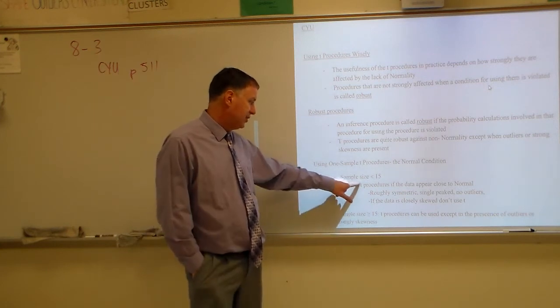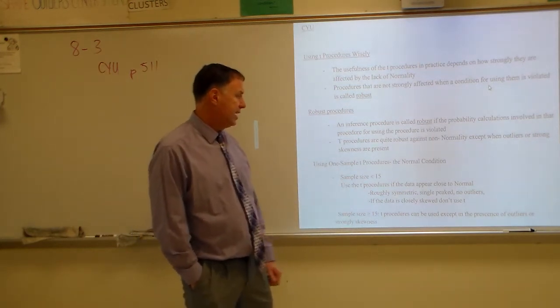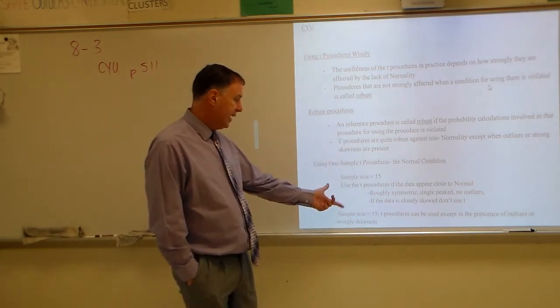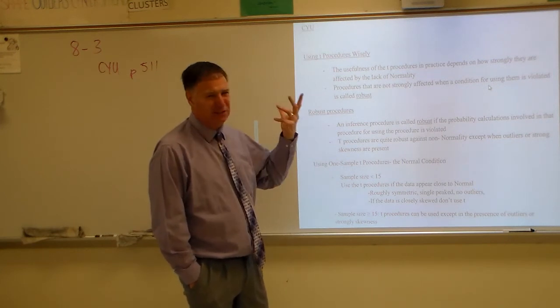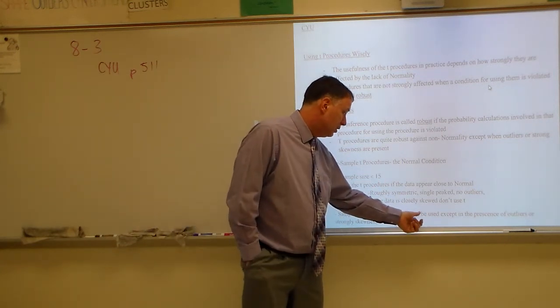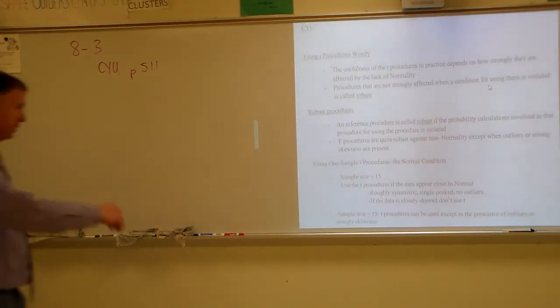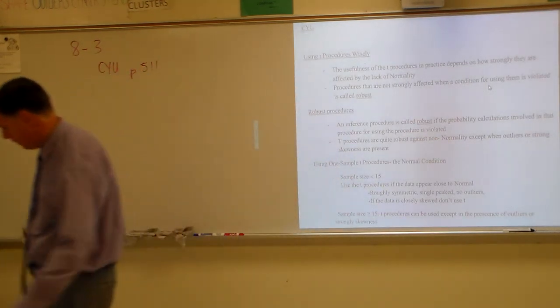Use the T if the sample size is less than 15, use the T procedures if the data appears close to normal - roughly symmetric, single peak, no outliers. If the data is clearly skewed - I don't know if that means closely skewed, it's probably typed in wrong - don't use T. I think it probably means severely skewed. Let me see if I can verify that. Clearly skewed, that's what it's supposed to be, not closely. Clearly skewed.